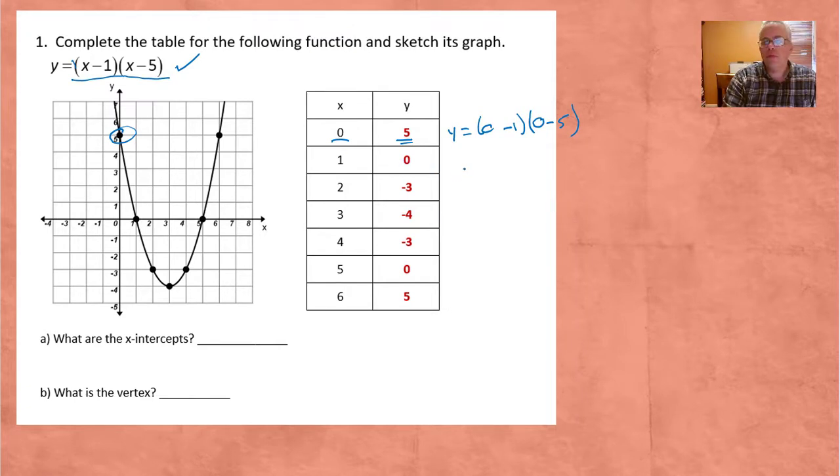0 comma 5, that's where that point came from. 1 comma 0, we simply put in 1 for x. 1 minus 1 times 1 minus 5, 1 minus 1 is 0 and 0 times anything is 0. It's that point right there. So we can complete the table just by putting in values of x, and when we plot the points we get our parabola.